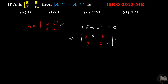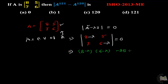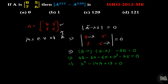Here lambda is the unknown eigenvalue of matrix A. Multiply the two terms together to get a quadratic equation. The final equation will be quadratic in form.